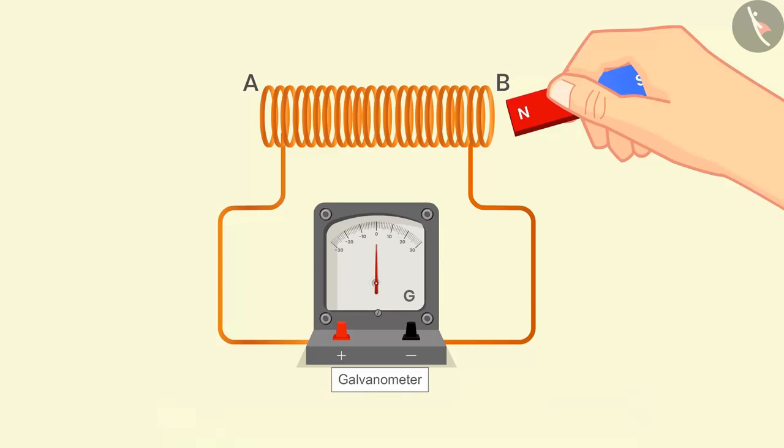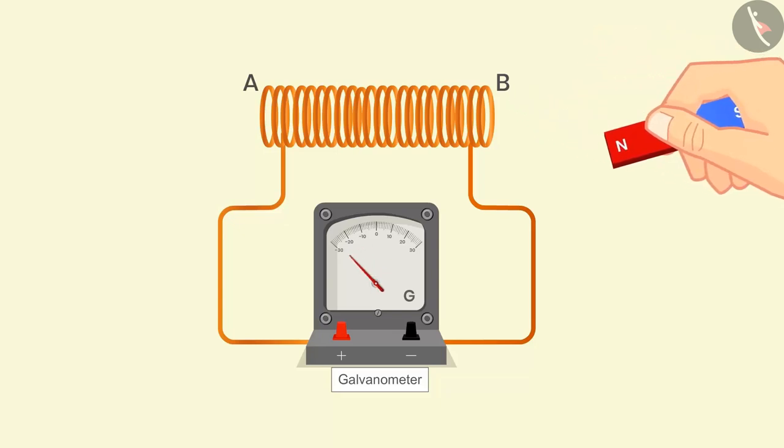This needle comes back to zero as soon as the motion of the magnet stops. In the same way if we withdraw the north pole away from the coil then deflection in the opposite side can be seen in the needle which shows the current is flowing in the opposite direction in the circuit.